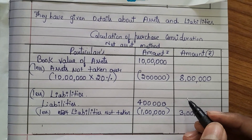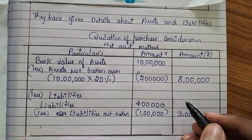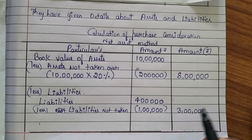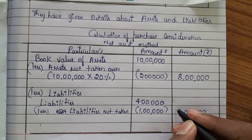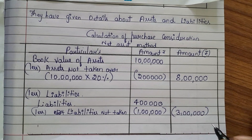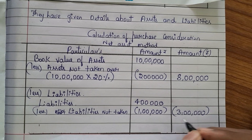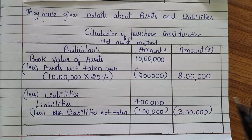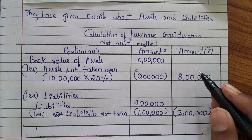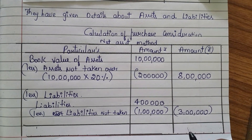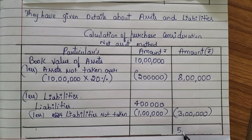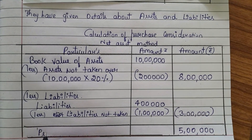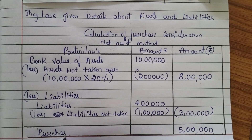As explained in the introduction, in the net asset method, we minus the total value of liabilities from the total value of assets. So we have to minus 3 lakh from 8 lakh. When we minus 3 lakh from 8 lakh, we get 5 lakh. This 5 lakh is nothing but the purchase consideration.